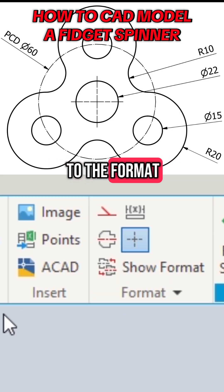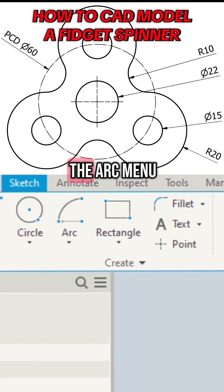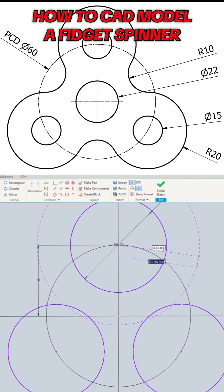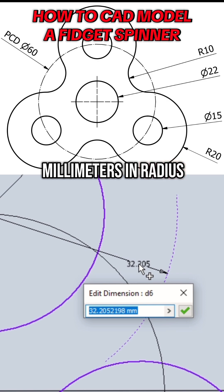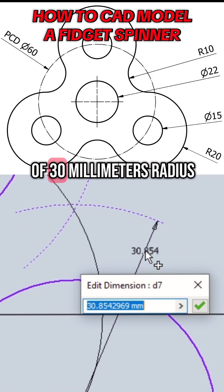The next step is to go to the format menu and turn on construction lines. Then go to the arc menu and select centre point arc. Using the centre point of the top circle, draw an arc that measures 30 millimeters in radius. Then using the centre point of the right hand circle, draw another arc of 30 millimeters radius.